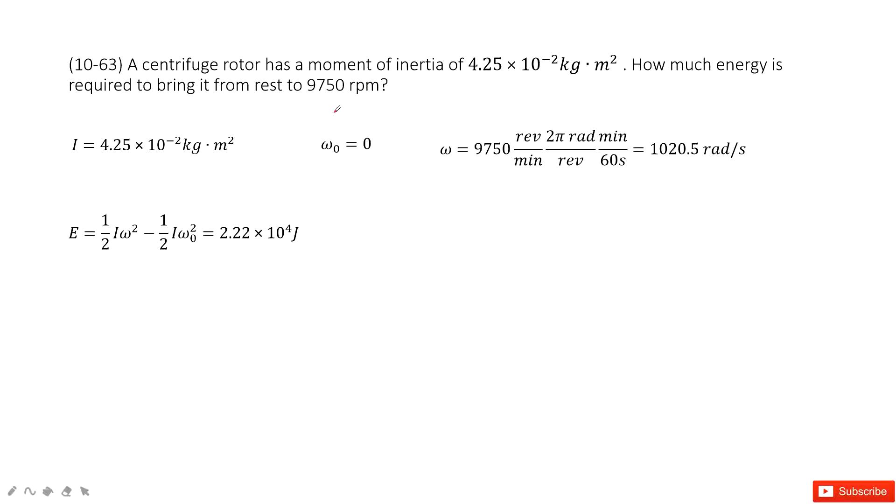The moment of inertia is given, and the initial angular velocity is given. Final angular velocity is given, and we convert the unit to radians per second. This one asks you how much energy is required.